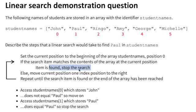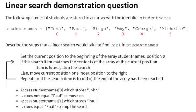Once we've found our search item we would obviously stop. The two situations that would stop a linear search are: the search item is found, or we have reached the end of the array. Those are the two conditions that would end the linear search algorithm.